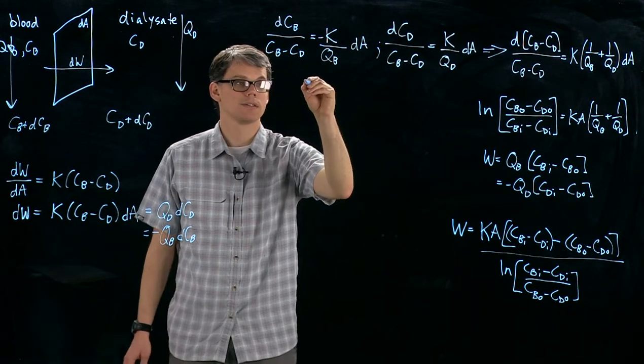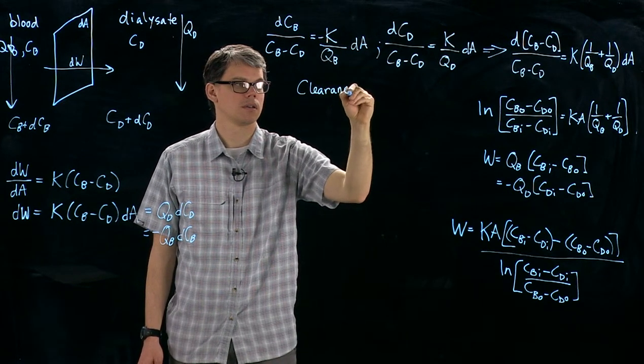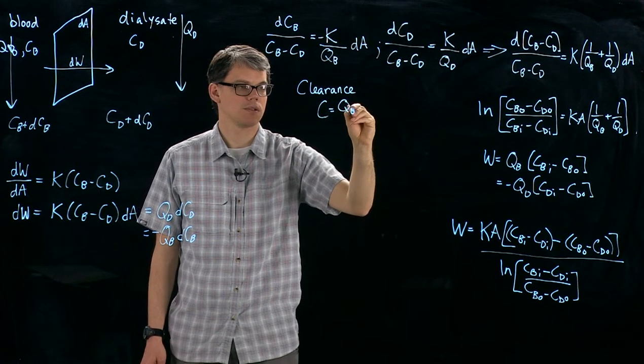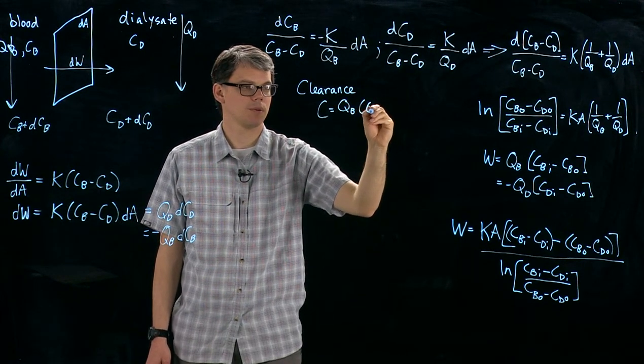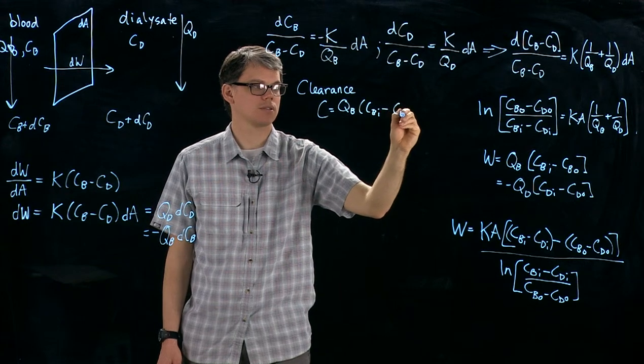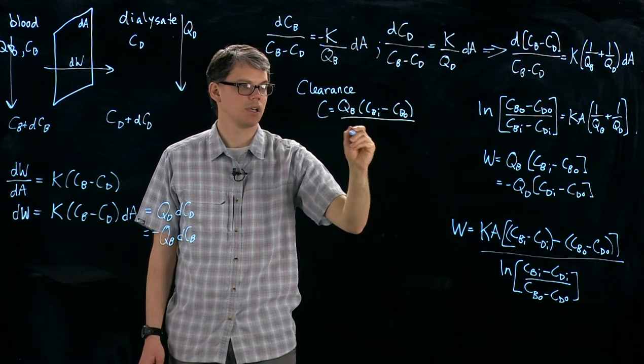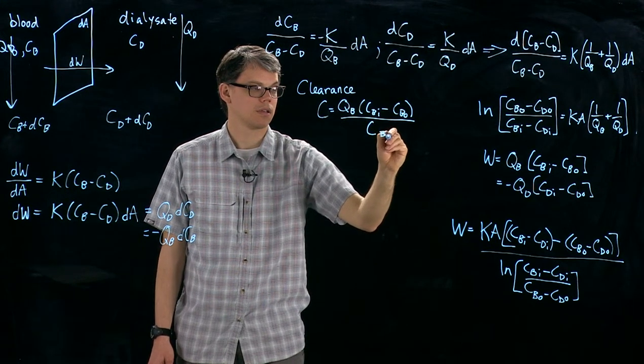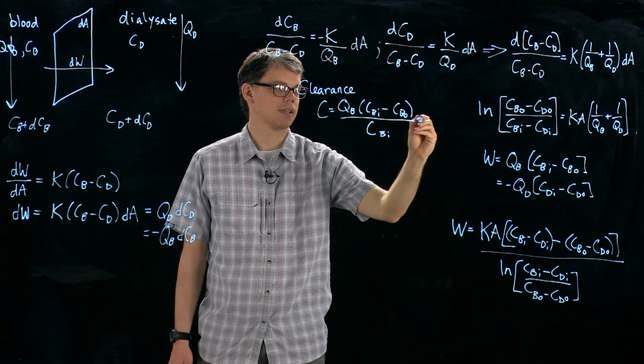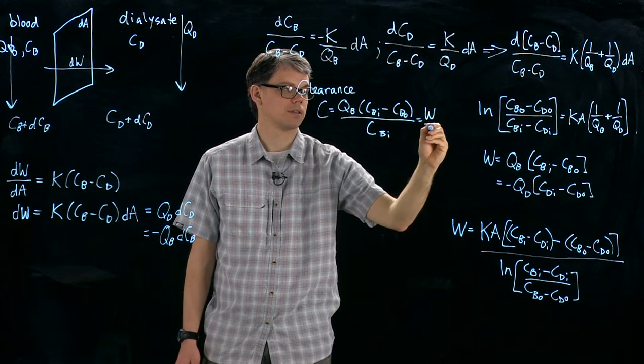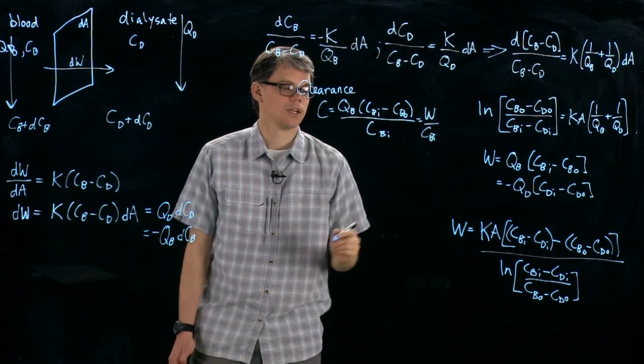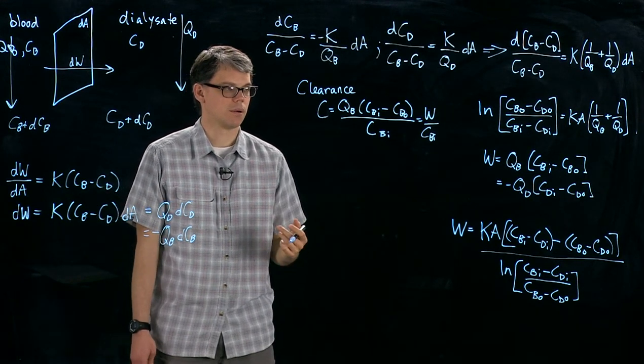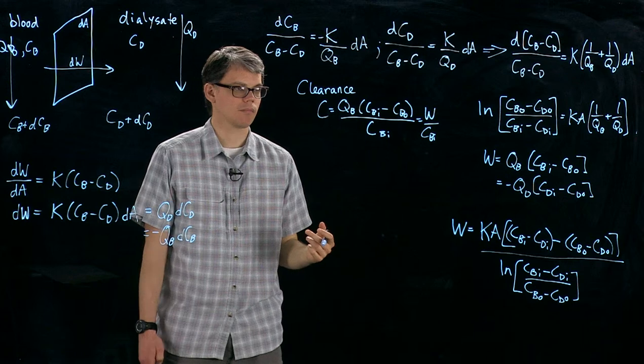One or two more measurements of interest when looking at a dialyser are the clearance, and that's denoted C, and that's just equal to blood flow rate times the change in concentration in the blood over the concentration on the inlet. Again, we can make that substitution on the top in the numerator. So this is the amount of blood that is totally cleared of solute in a given time and that's the clearance.